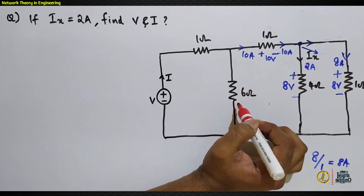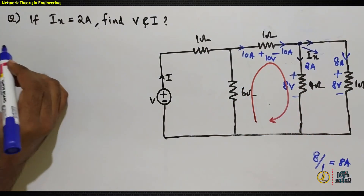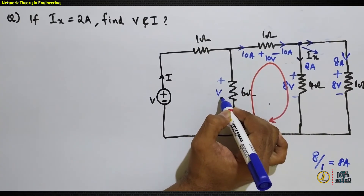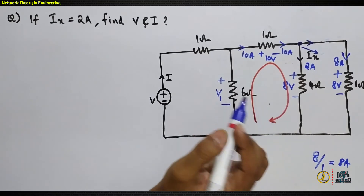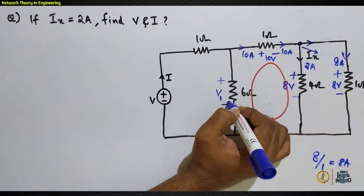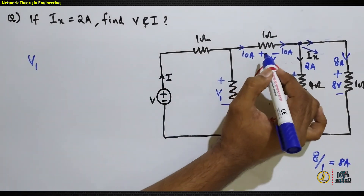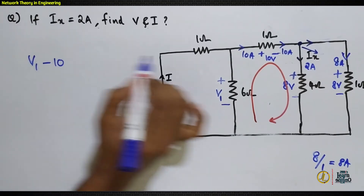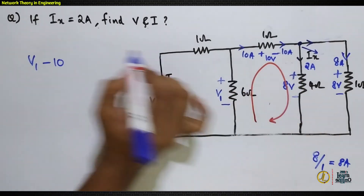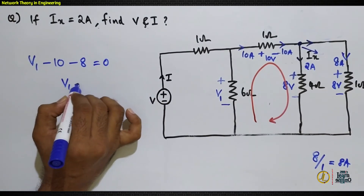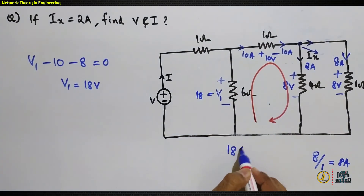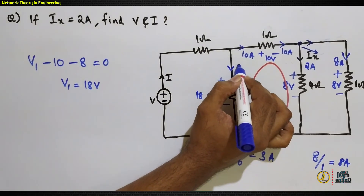To find the voltage across the 6-ohm resistor, assume polarity and label it v1. Writing KVL around this loop: +v1 − 10 − 8 = 0, so v1 = 18V. With 18V across a 6-ohm resistor, the current through that branch is 18 ÷ 6 = 3A.